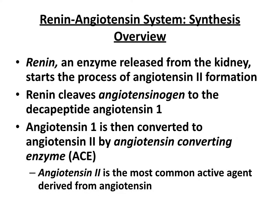If your renin-angiotensin system is out of whack, your blood pressure can be out of whack, and you can have things like cardiac remodeling stimulated. Renin is, of course, the first enzyme in the renin-angiotensin system. Renin gets released — it's made in the kidney and released from the kidney — and starts the process of angiotensin II formation. Angiotensin II is the most active angiotensin molecule.